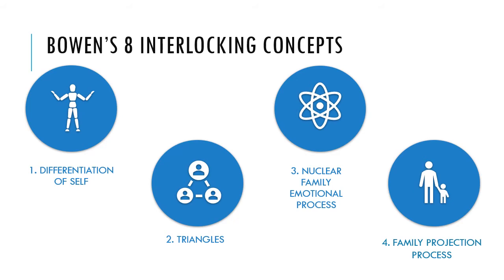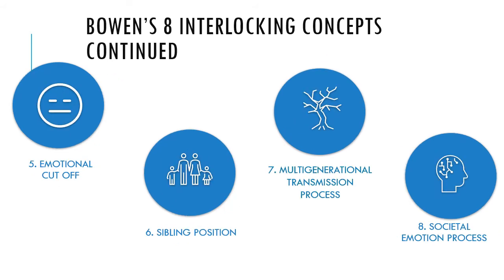Number four: Family projection process — the way a parent transfers their emotional problems to the next generation. Number five: Emotional cutoff — when people try to manage poor differentiation of self by physically distancing themselves or emotionally withdrawing from the relationship.